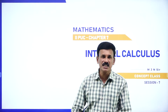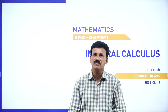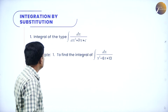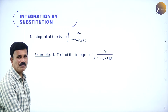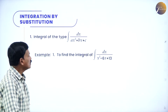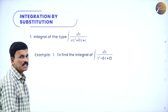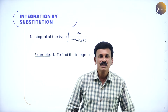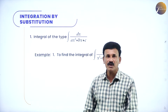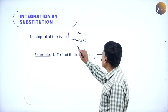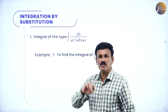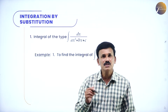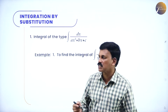Any integral of the form — a linear equation divided by a quadratic equation. Now let us come to the first method. Integrals of the form 1 over Ax² + Bx + C, that is dx divided by a quadratic equation. Convert this quadratic equation into some important integrals — reduce this equation to some important integrals — then evaluate it.